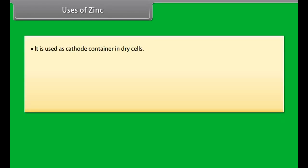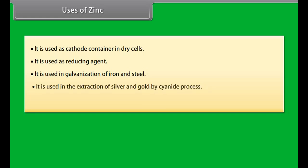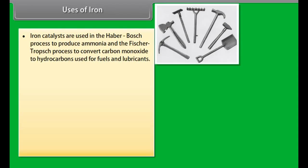Zone refining: It is based on the principle that impurities are more soluble in the melt than in the solid state of the metal. The impure metal is heated with the help of circular heaters at one end of the rod of impure metal. The molten zone is moved forward along with impurities and reaches the other end and is discarded. Pure metal crystallizes out of the melt. The process is repeated several times and heater is moved in the same direction. For example, it is used for purifying semiconductors.